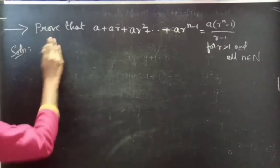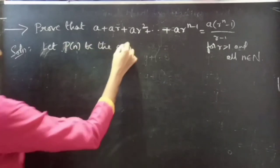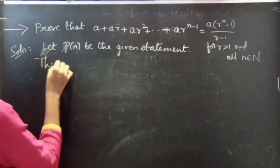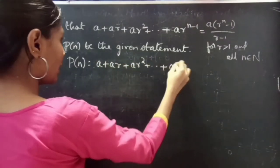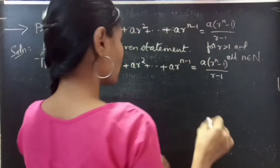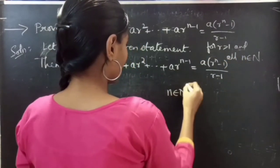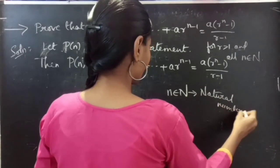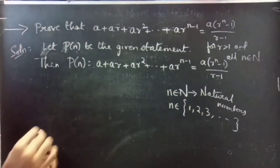Solution. Let P of n be the given statement. Then P of n states that a plus ar plus ar squared plus ... plus a times r to the power n minus 1 equals a times (r to the power n minus 1) divided by (r minus 1), where r is greater than 1 and for all n belonging to the natural numbers N. We have to show that the statement is true.